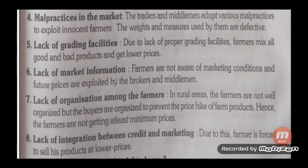Fourth defect: Malpractices in the market. Traders and middlemen adopt various malpractices to exploit innocent farmers — including using unfair weights — so farmers do not receive proper prices.